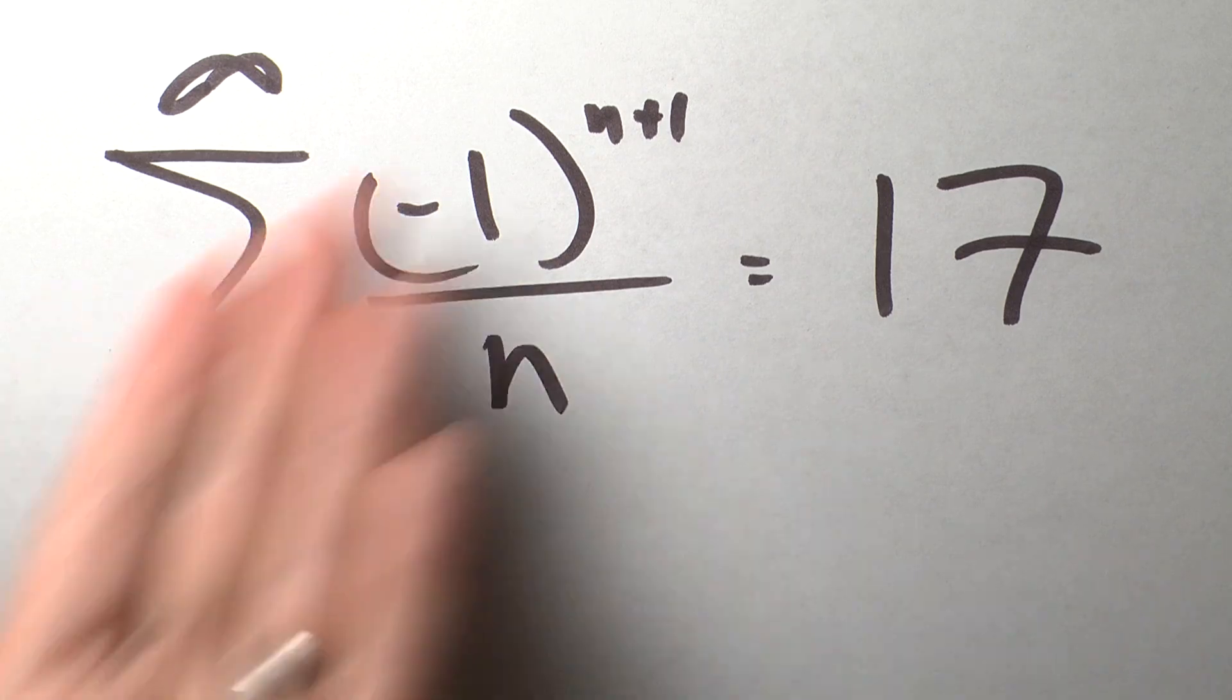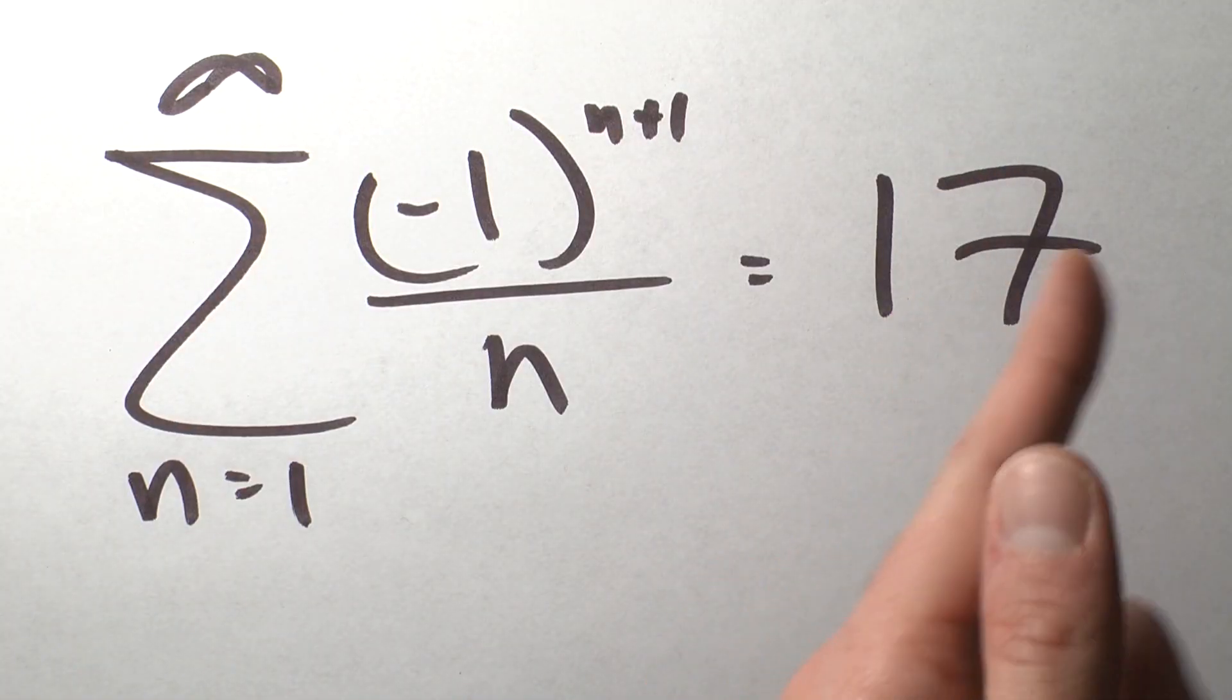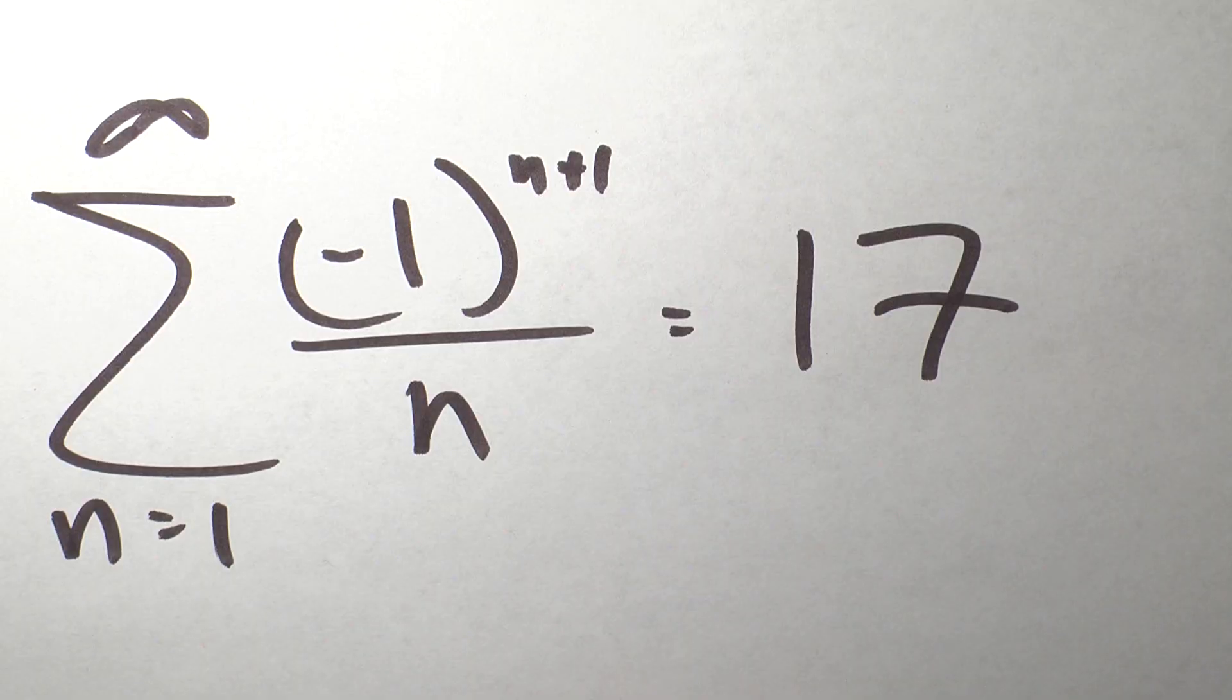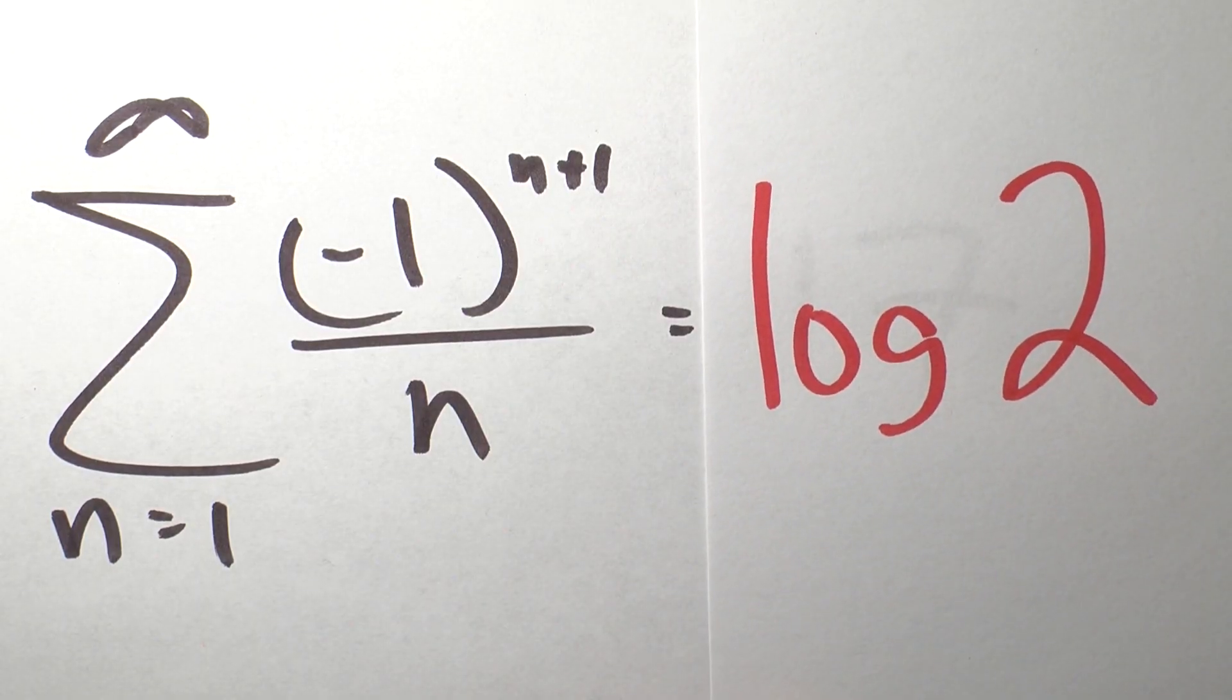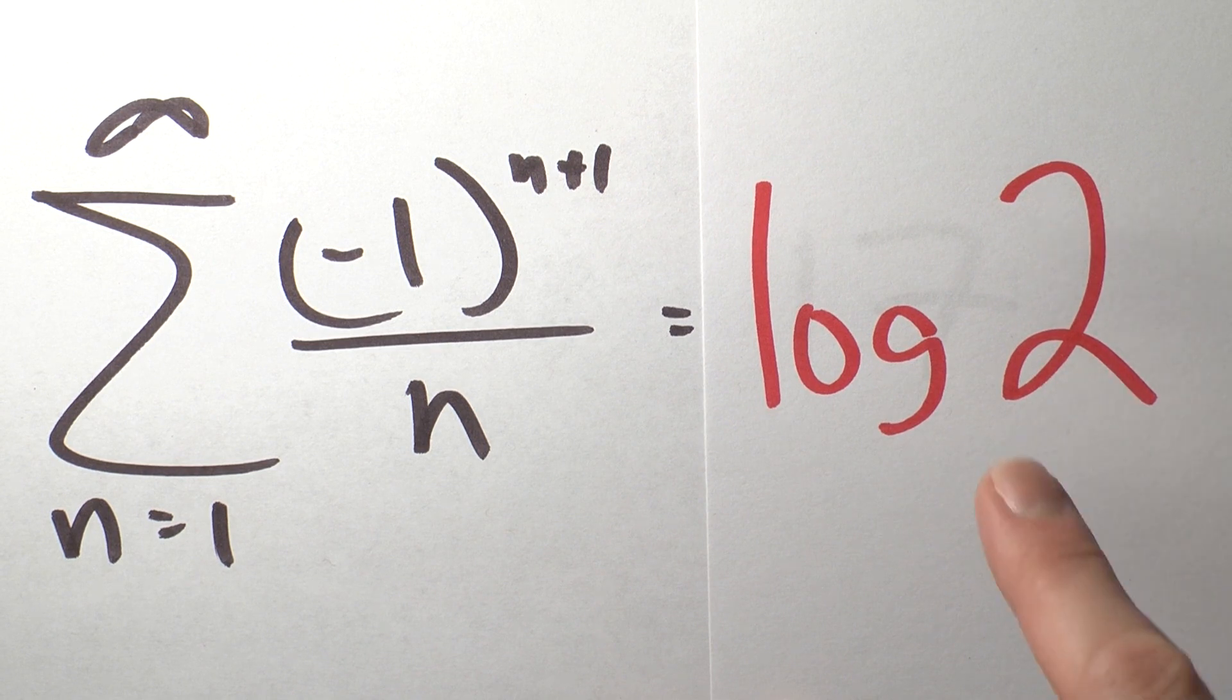So I'm going to keep moving back and forth past 17. And in the limit, I'll get 17. So does that mean that this sum is equal to 17? No, no. In fact, we're going to see that this series is equal to the natural log of 2.